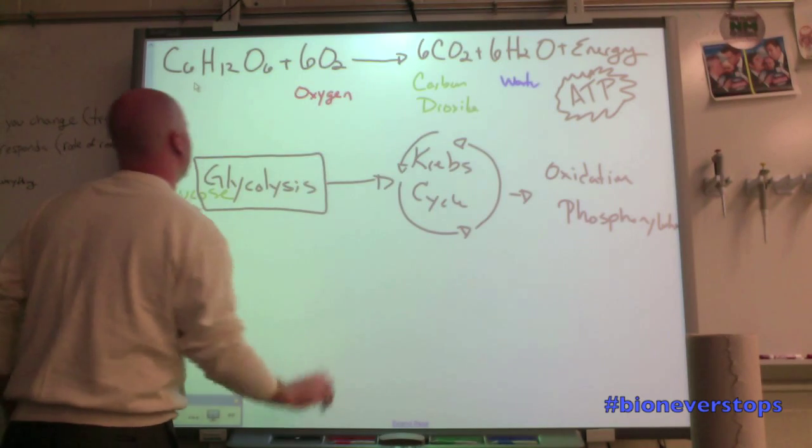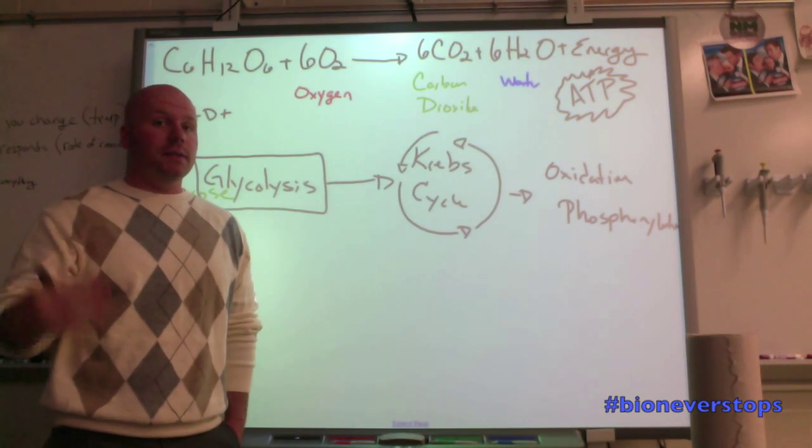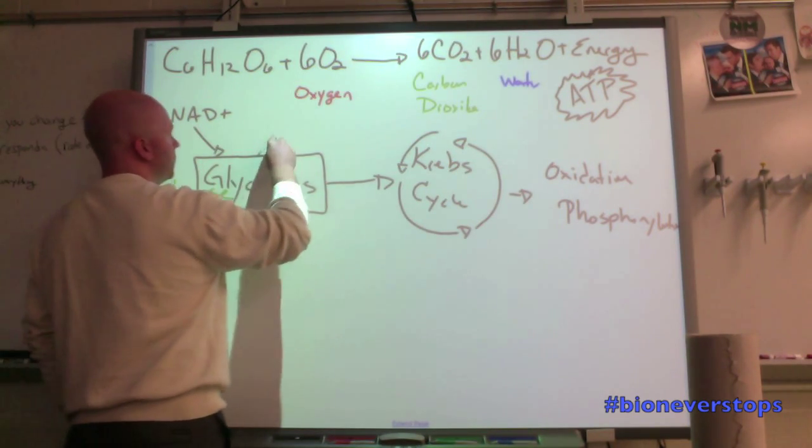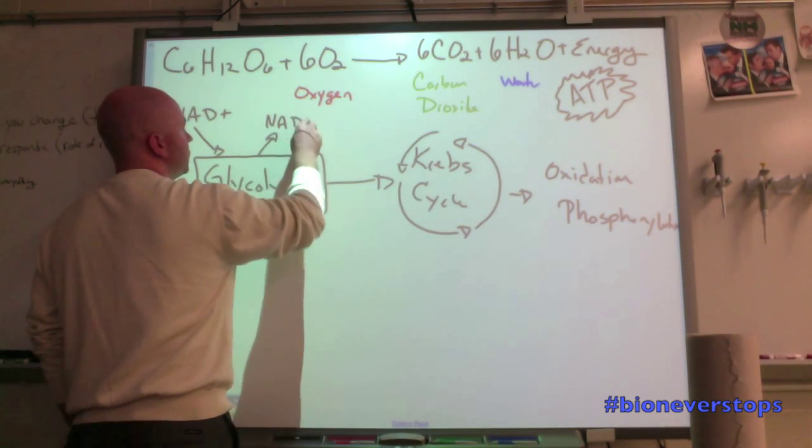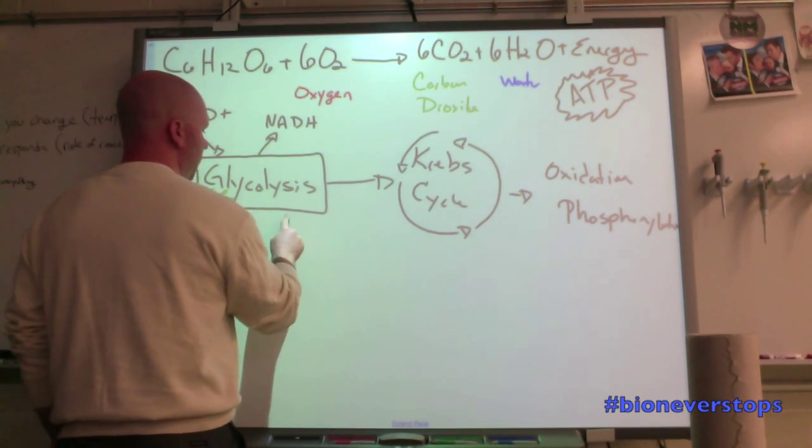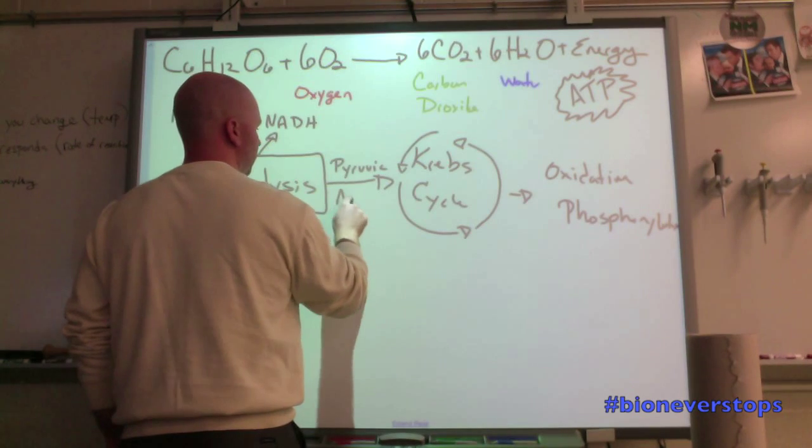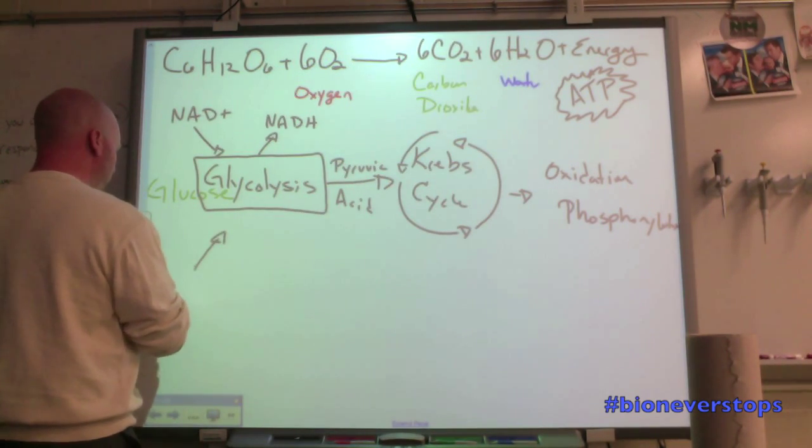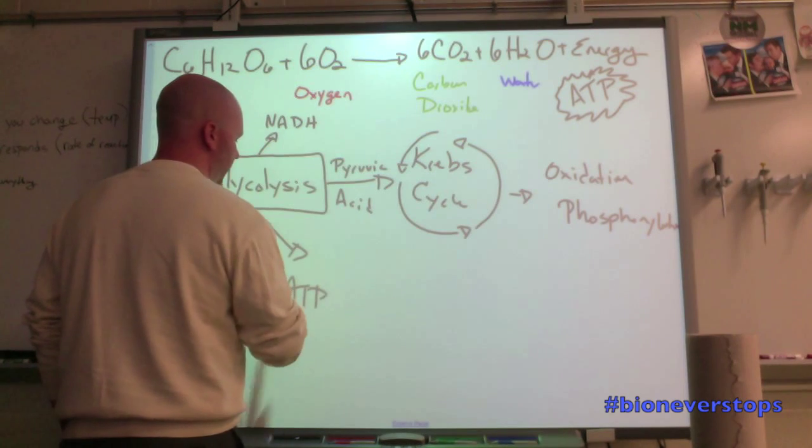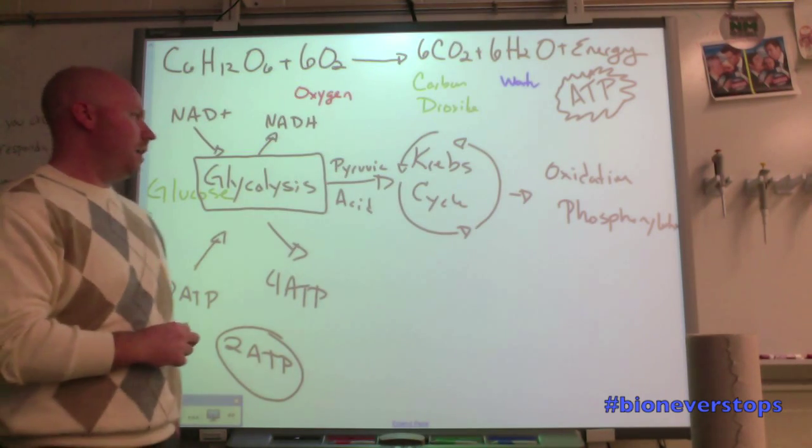Something else that goes into glycolysis is a molecule NAD+. Just like NADPH or NADP+ in photosynthesis, it's an electron carrier. So that's going to go into glycolysis, and NADH is going to come out. And that's when it has the electron, that's when it has its energy. Another thing that comes out, we have pyruvic acid, or pyruvate. We have to put two ATP in, but four ATP come out, so we have a net gain of two ATP coming out of glycolysis.